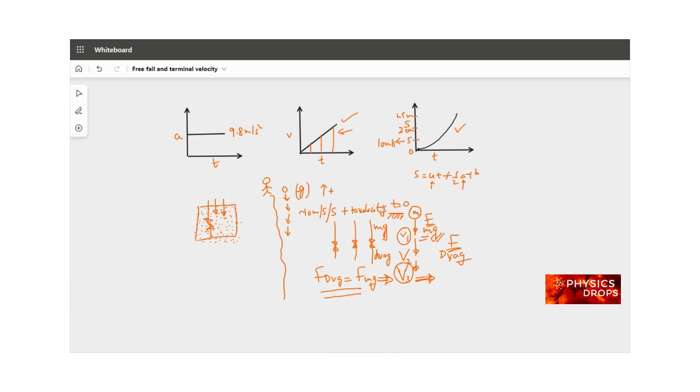Whatever v3 is, it continues to move with v3 velocity. So v3 is called the terminal velocity.